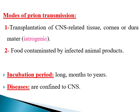From the previous data, you can conclude that the modes of prion transmission are: first, transplantation of CNS-related tissue — such as transplantation of the cornea or the dura mater, called iatrogenic infection because it results from a medical procedure — and second, through ingestion of contaminated food from infected animal products. The incubation period is very long, reaching months or even years, and the disease is usually confined to the central nervous system.